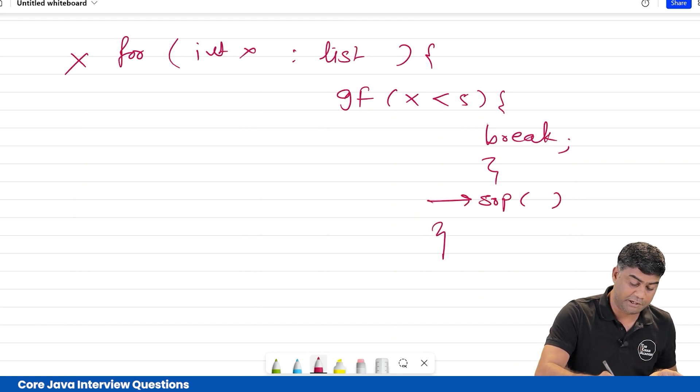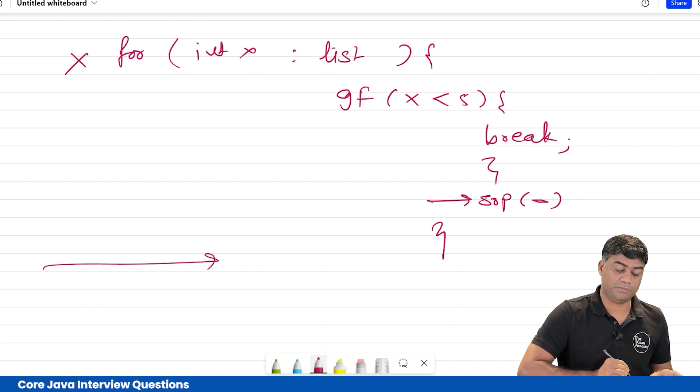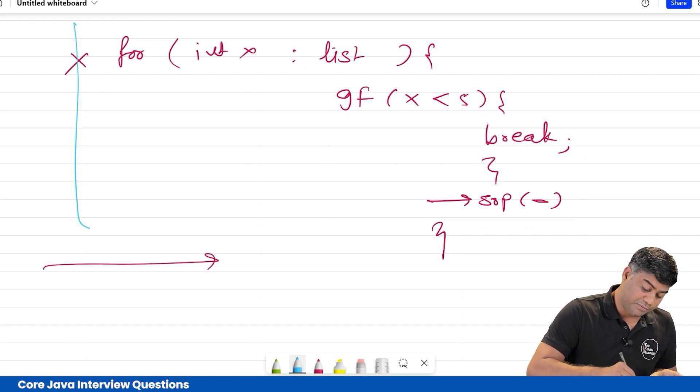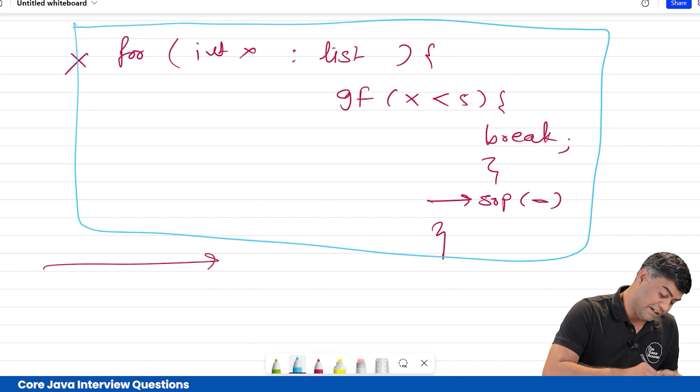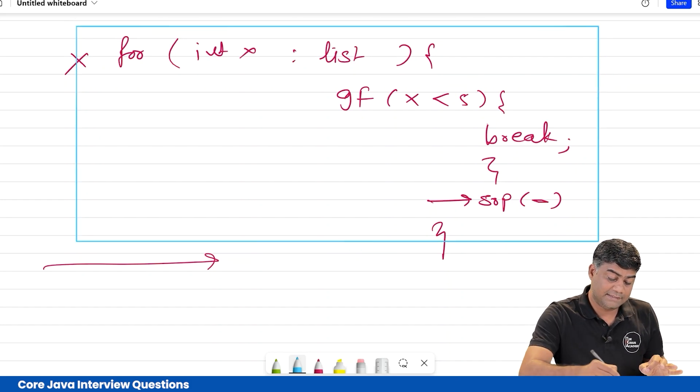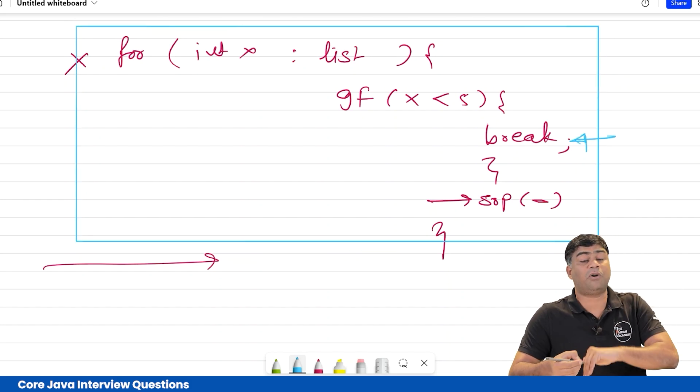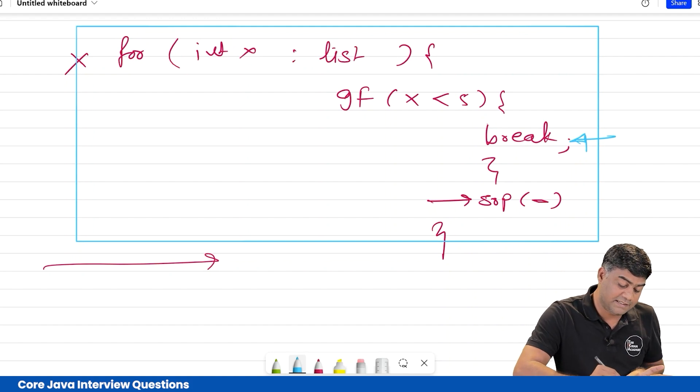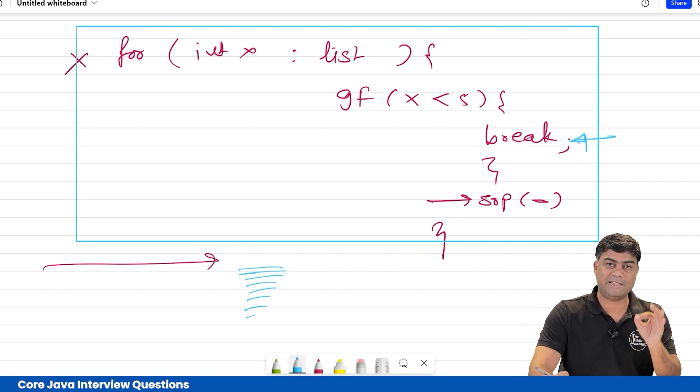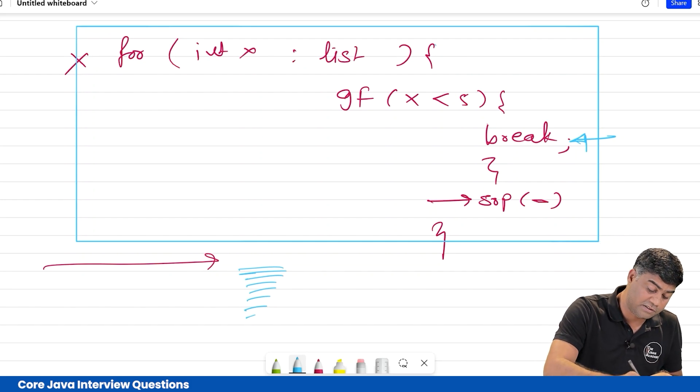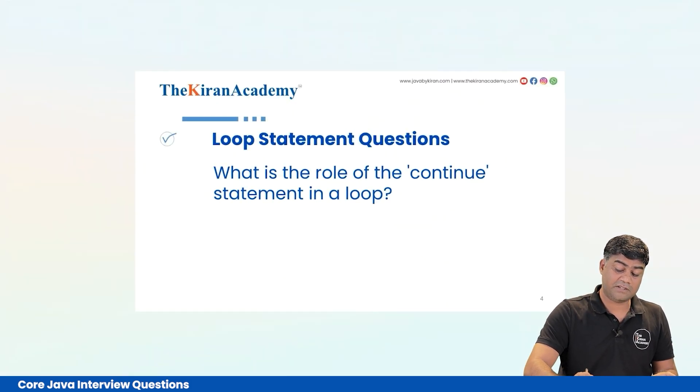No statements after this break will get executed. If you write some System.out.println here, it will never get printed. It automatically comes out of the for loop and starts executing lines written below. Remember, break means termination of the loop.